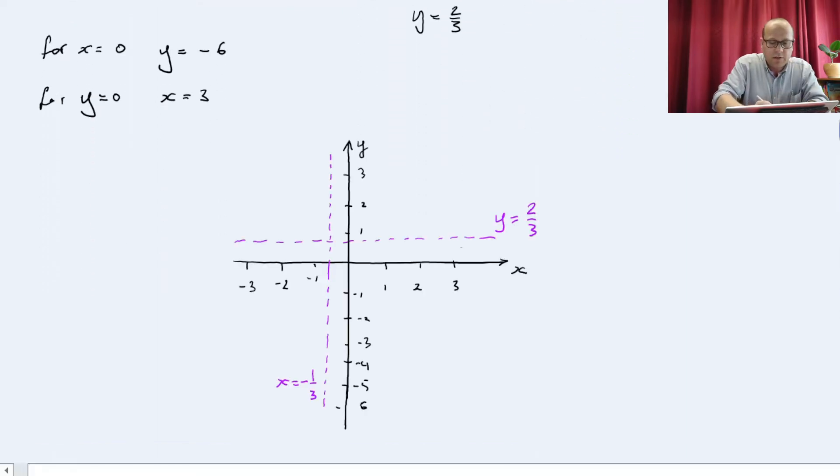I have now sketched the vertical asymptote, x equals minus one third, and the horizontal asymptote, y is equal to two thirds, which we found above. I also plot the point where it cuts the x axis and the y axis. And now I sketch the graph. So that's the graph sketched.